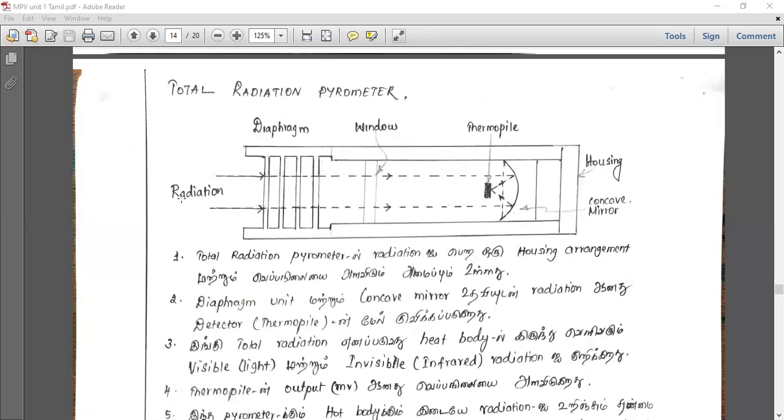We measure the hot body and determine its temperature. We measure the invisible radiation intensity. The parallel beams go inside where the detector is placed.